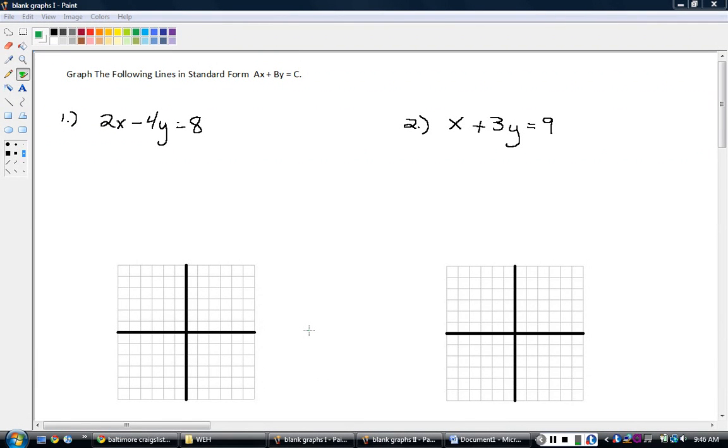The directions are to graph the following lines. They're given in standard form. Standard form looks like this: AX plus BY equals C, where A, B, and C are real numbers.